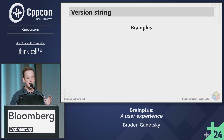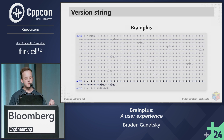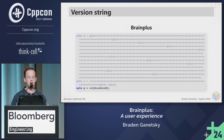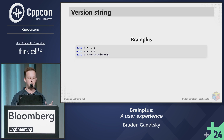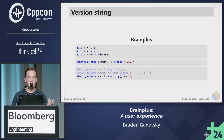In BrainPlus, the digit parser looks like this, the separator parser looks like this, and combining them together looks like this — it's exactly the same thing, just collapsed a bit. When you parse '1.2.3', it's exactly the same result: you get a tuple of one, two, and three, and the remainder is nothing.